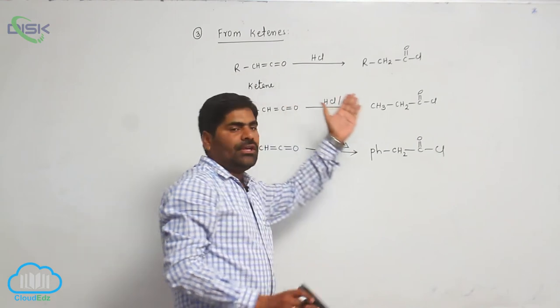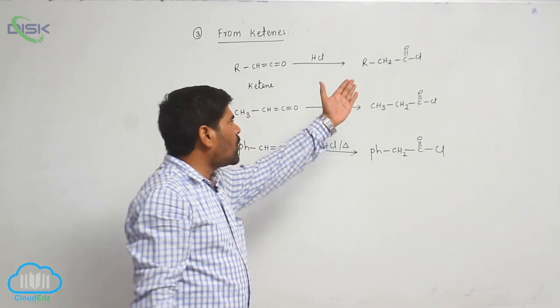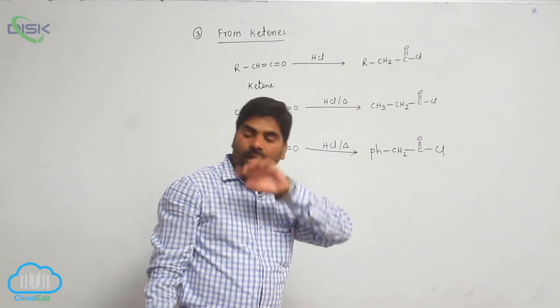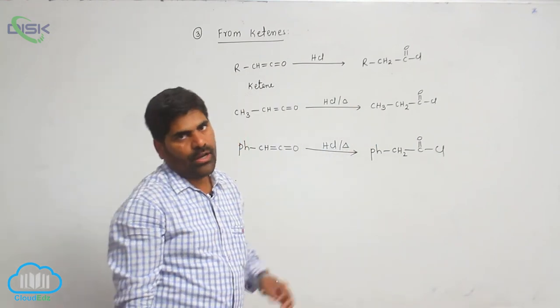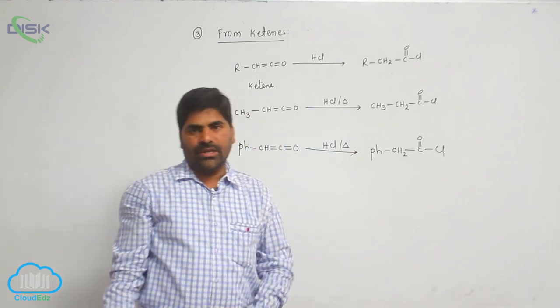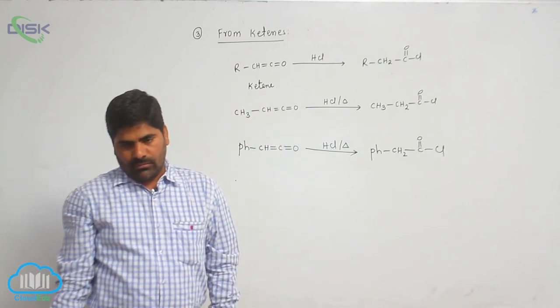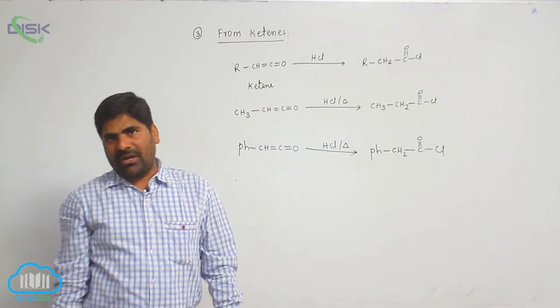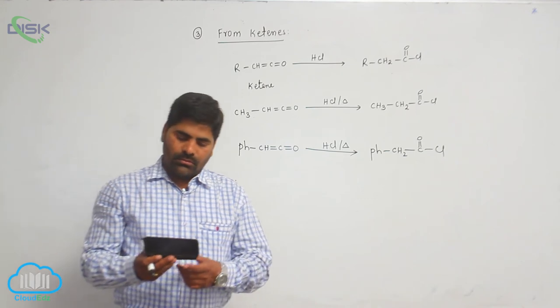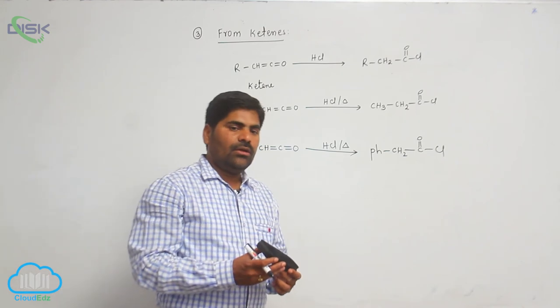So, Ketene reacts with hydrochloric acid to form acid chlorides. These are the preparative methods of acid chlorides.